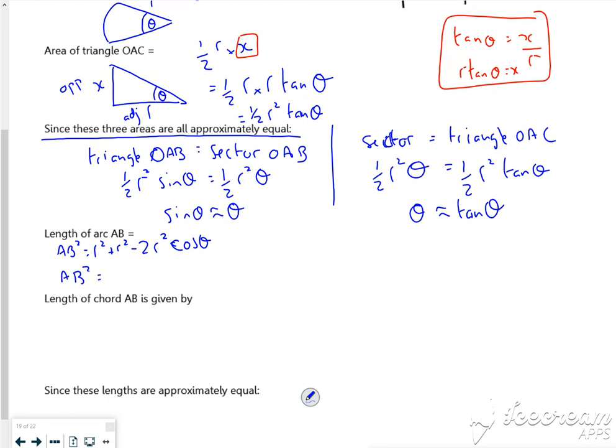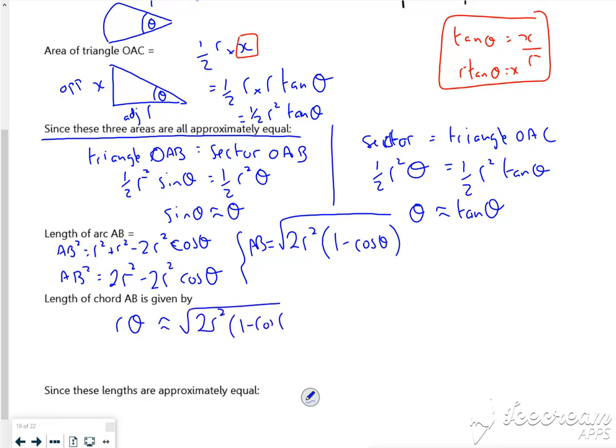So A to B squared is 2R squared cos theta. I can take out the R squared. So I can take out the 2R squared, and I've got 1 minus cos theta. Now that gets all square rooted for the length of A to B. Now we know the length of the arc of the chord is R theta, and if that's the same as the length of the arc, then that's roughly the same as the 2R squared, 1 minus cos theta.